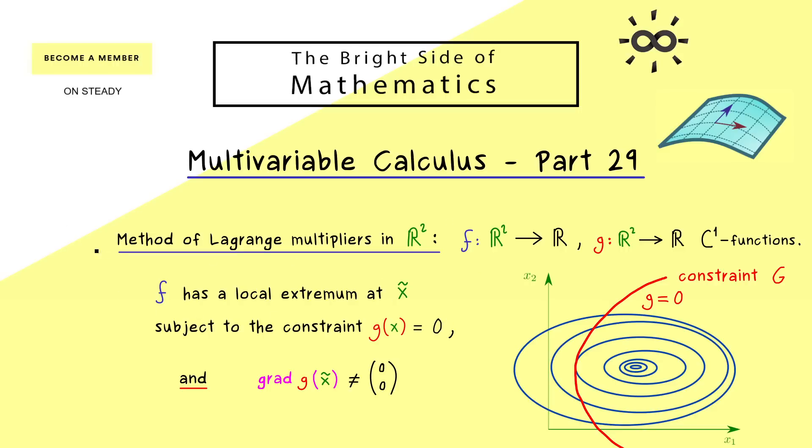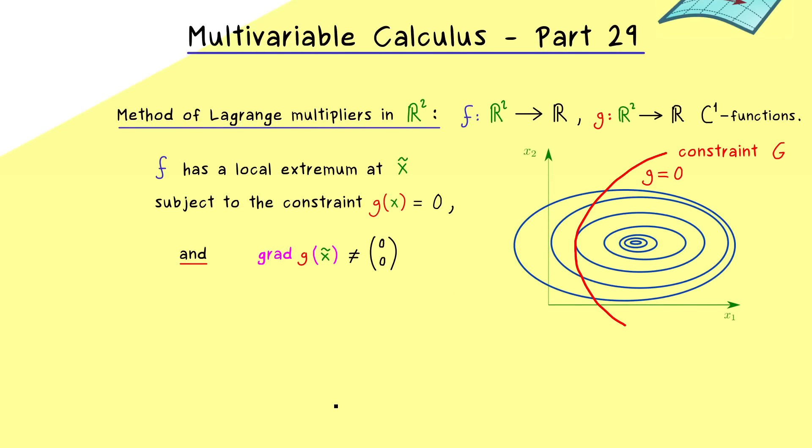Hence only on this contour line given by g we search for extrema of function f. Now the method of Lagrange multipliers gives us a necessary condition for such a local extremum if the contour line of g is nice enough, which simply means there is no point where the gradient of g completely vanishes. In other words, if we assume these two conditions, we have an implication. Namely, the gradient of f and gradient of g lie in the same one-dimensional subspace.